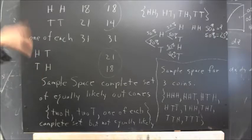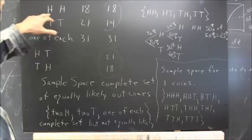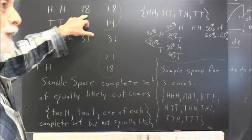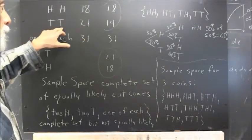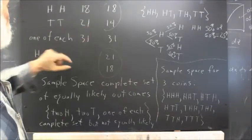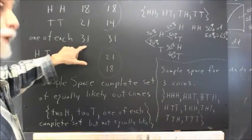and we found that people got two heads a total of 18 times, two tails a total of 21 times, and one of each a total of 31 times.